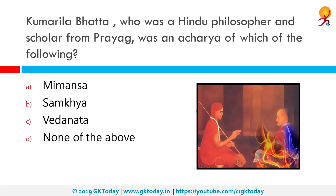Kumarila Bhatta was a Hindu philosopher and scholar from Medieval India. He is famous for his various theses on Mimamsa, such as the Mimamsa Sloka Vartika. Bhatta was a staunch believer in the supreme validity of Vedic injunction, a great champion of Purva Mimamsa, and a confirmed ritualist.